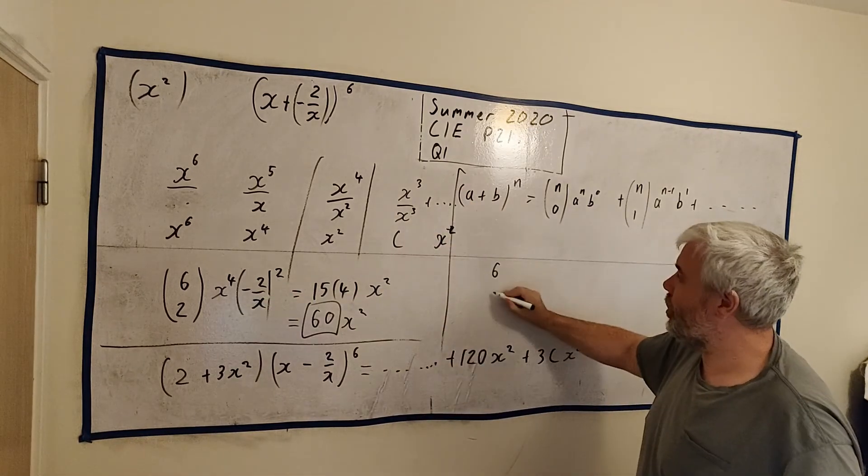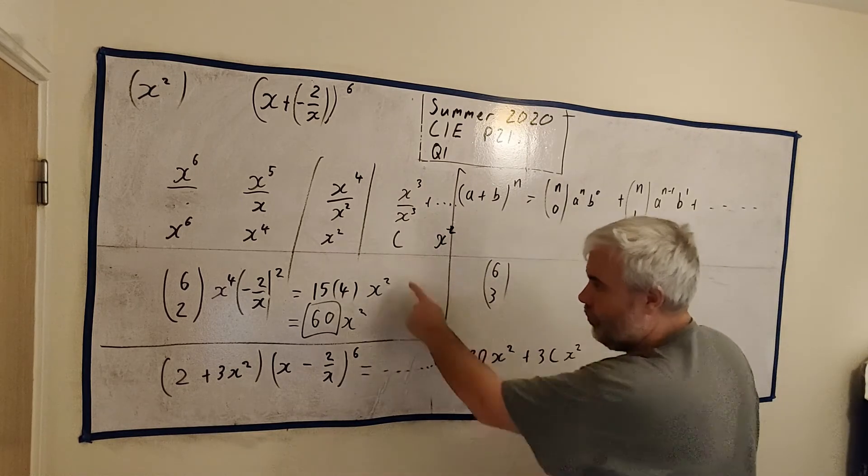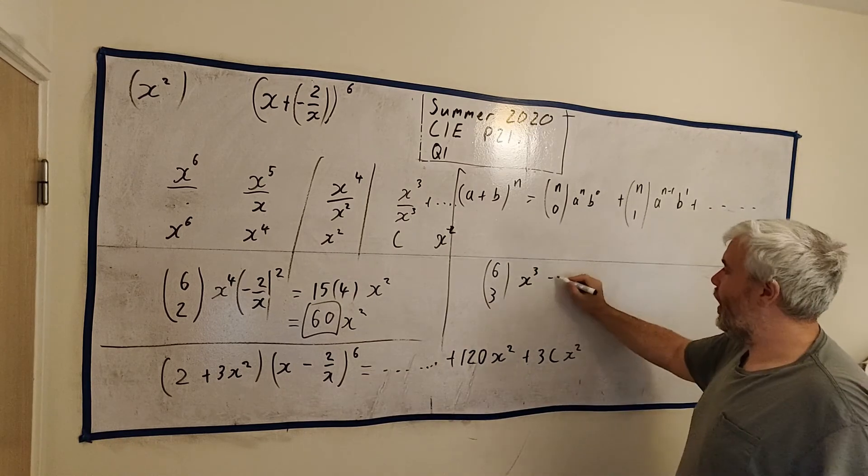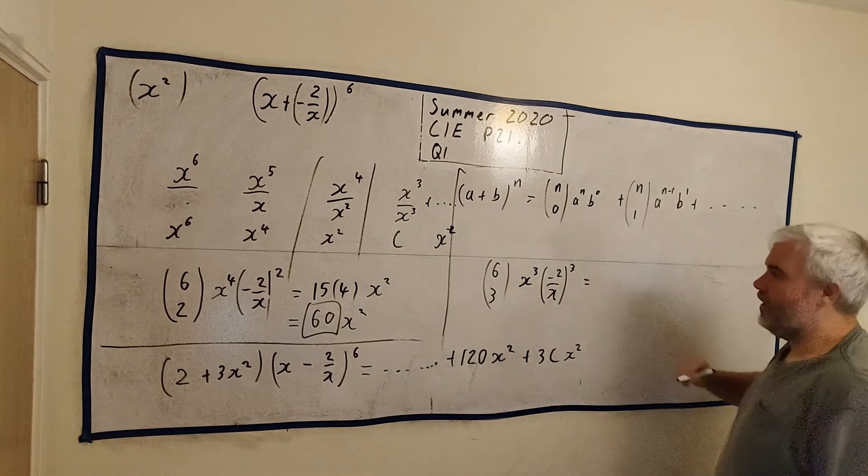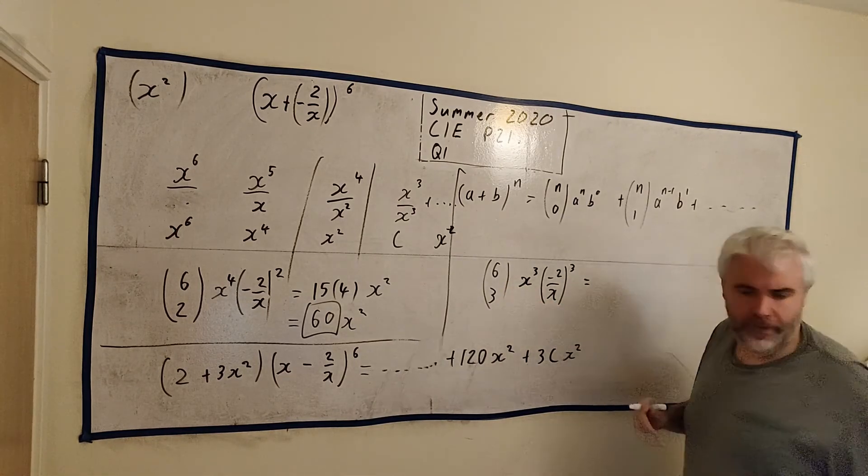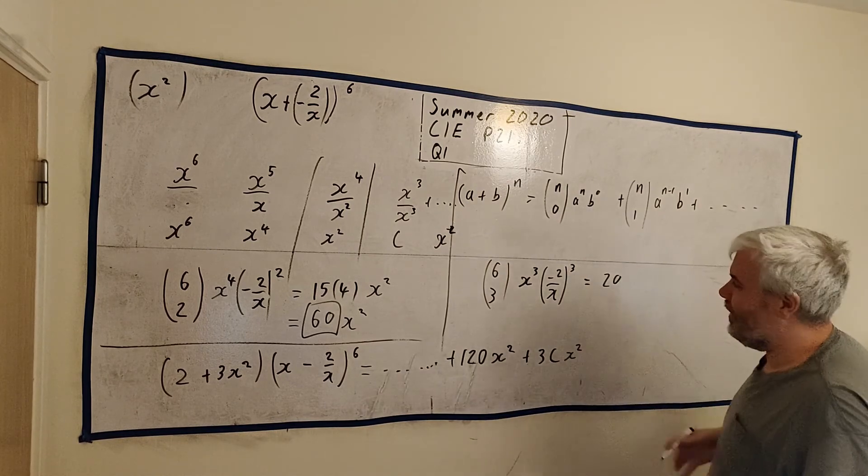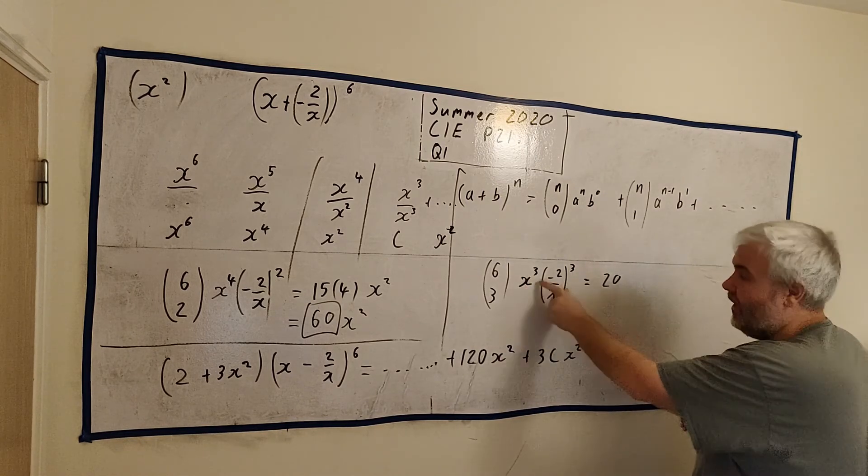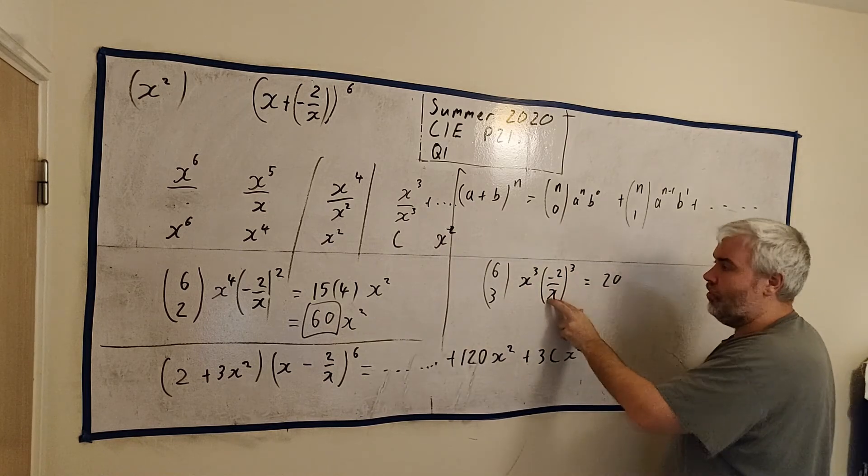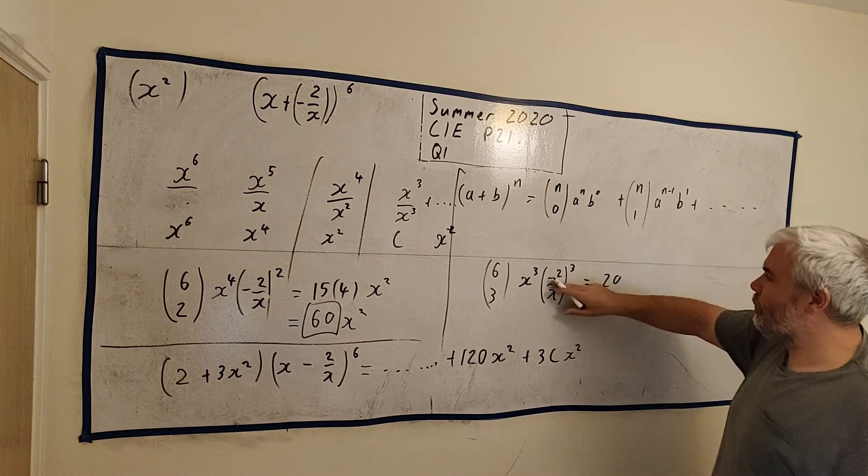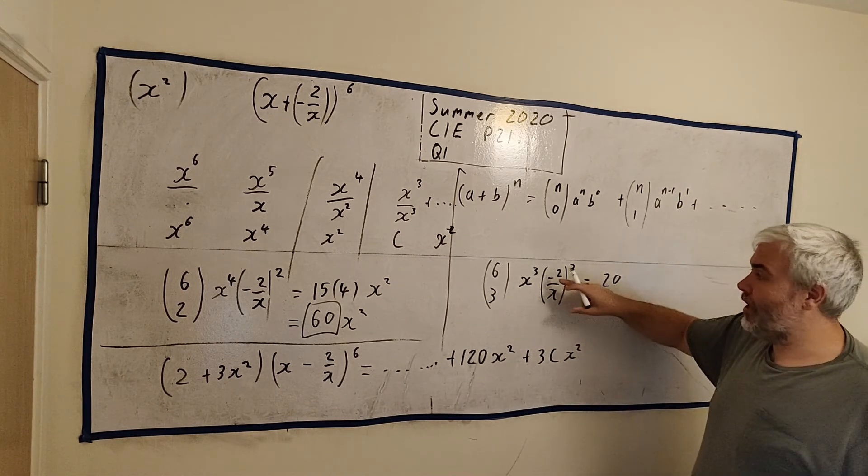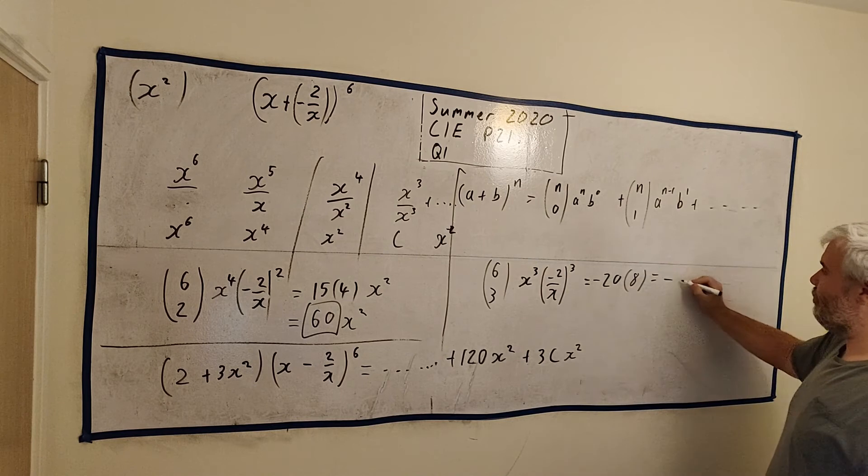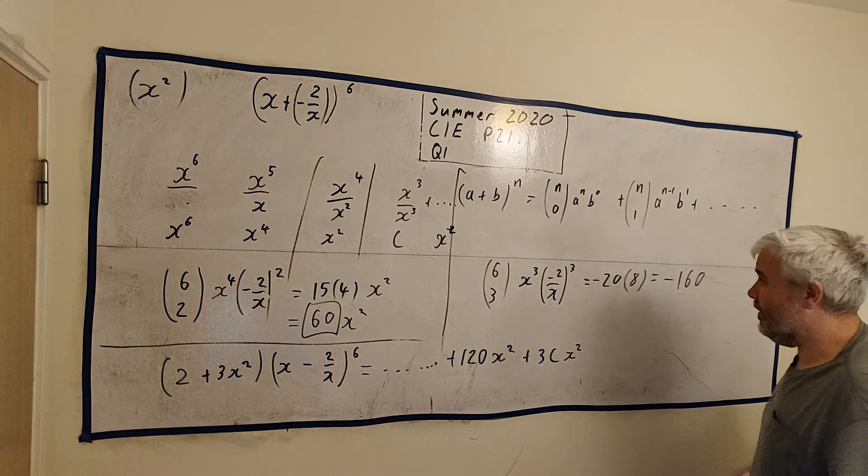We'll just do the same thing here. We'll do 6 choose 3 this time. Because it's the third term. 6 choose 3, x to the power of 6 minus 3. And then minus 2 over x to the power of 3. And all that equals, 6 choose 3 is, I believe, 20. I had to look at a calculator. I just happened to have done it a few minutes ago. So 20, let's see, x cubed times x divided by x³ is 1. So that disappears. So we're really just left with this minus 2 to the power of 3. Minus by a minus by a minus is a minus. 2 times 2 times 2 is 8. So this answer is minus 160, this coefficient here.